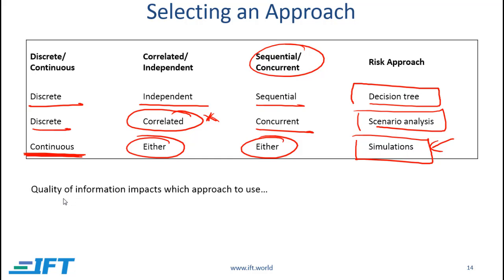When selecting an approach, we should also think about the quality of information. Simulations depend heavily on the quality of the input data. So if we are confident about the probability distributions and the parameters that we are using, then simulations make sense. On the other hand, if we don't have high confidence in our input data, then decision trees or scenario analysis would be more appropriate. Generally, when analysts are dealing with new and unpredictable risks, they use scenario analysis.